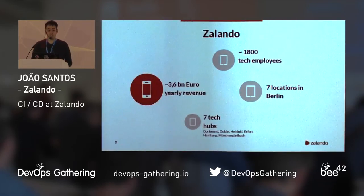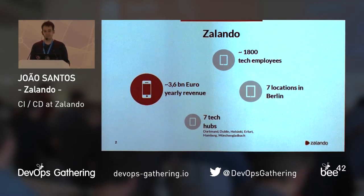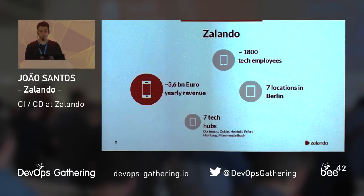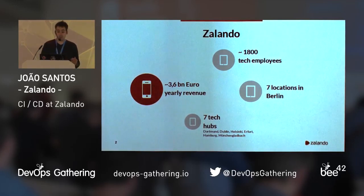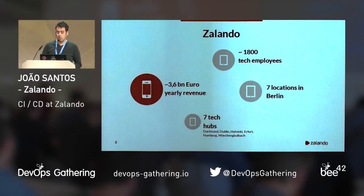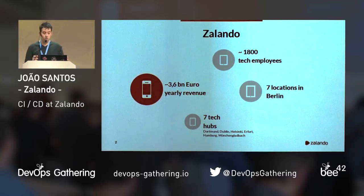Does everyone know what Zalendo is? For those that don't know, Zalendo is the biggest fashion platform in Europe. To give you some context, Zalendo has more than 1,800 tech employees and seven tech hubs.